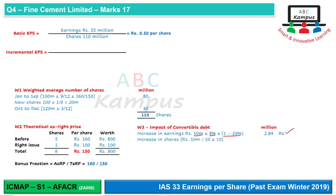For the effect on shares, every Rs. 50 of loan converts to 10 shares, so 10 million shares would be issued if the convertible debt is converted. Incorporating incremental earnings of Rs. 2.84 million and incremental shares of 10 million into the EPS formula gives incremental EPS. Since this is less than basic EPS, the convertible loans are confirmed to be dilutive — not anti-dilutive.